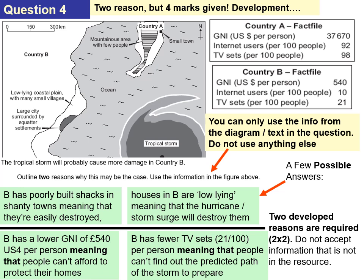The other example uses the map: houses in country B are low lying, and the storm surge will destroy them. Country B also has fewer TV sets — 21 per hundred — meaning that people can't find out about the predicted path of the storm. We won't accept anything not in the figure; you need a 'which means that' and you should quote figures as well.